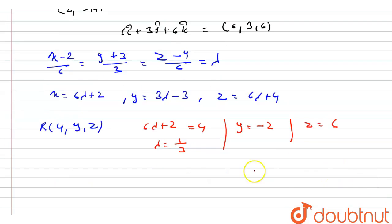So the coordinate of R is (4, -2, 6). Now we have to find the distance of R from the origin. Let the origin coordinate O be (0, 0, 0).